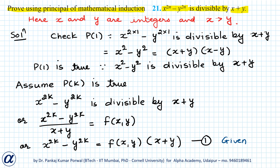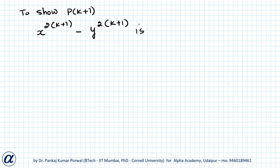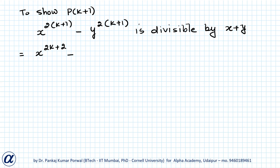So I want to show P(k+1). I can get the statement for P(k+1) by substituting n equals k+1 in the given expression, so I get x to the power 2(k+1) minus y to the power 2(k+1) is divisible by x plus y. This simplifies as x to the power 2k+2 minus y to the power 2k+2.